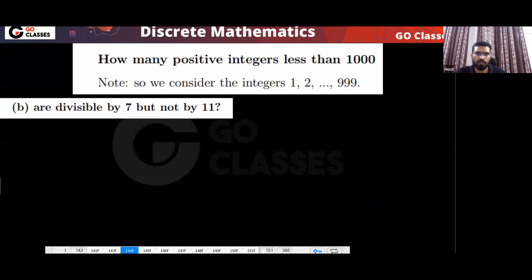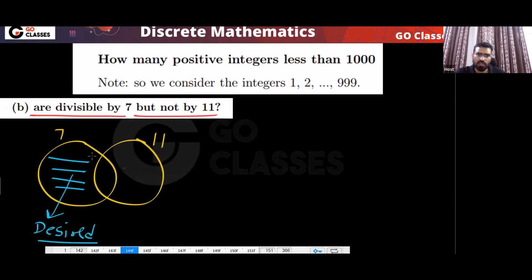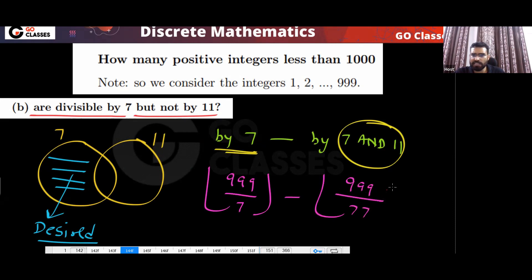Next: how many are divisible by seven but not by eleven? What you want is this area in the Venn diagram — divisible by seven minus divisible by both seven and eleven. Divisible by both seven and eleven means divisible by their LCM.